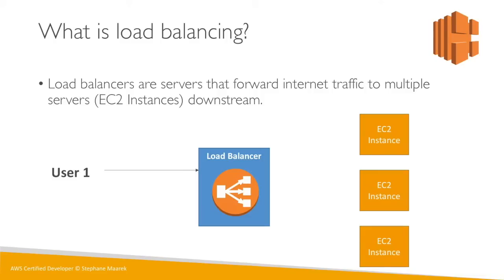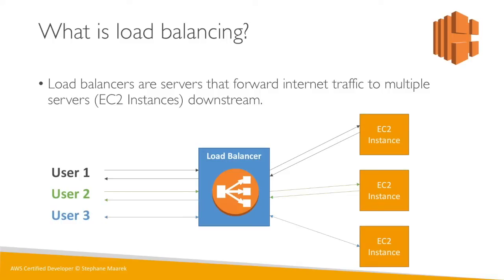When users connect, they don't connect directly to the EC2 instances — they connect to the load balancer. User 1 connects and the load balancer redirects that traffic to an EC2 instance, which sends back a response through the load balancer. Similarly, user 2 goes to another EC2 instance and user 3 to yet another. It's called a load balancer because users 1, 2, and 3 don't all go to the same EC2 instance — the load is being balanced.